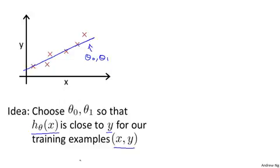So in our training set, we're given a number of examples where we know x, the size of the house, and we know the actual price it was sold for. So let's try to choose values for the parameters, so that at least in the training set, given the x's in the training set, we make reasonably accurate predictions for the y values.